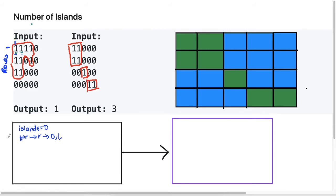Inside the outer loop we put the column index. For each row — row zero, row one, row two — you need to visit each column. So you say for each column index, go from zero up to the length of the columns, which you can get by taking the length of the first row since all rows have the same column count. So we have two for loops and we're able to visit each cell.